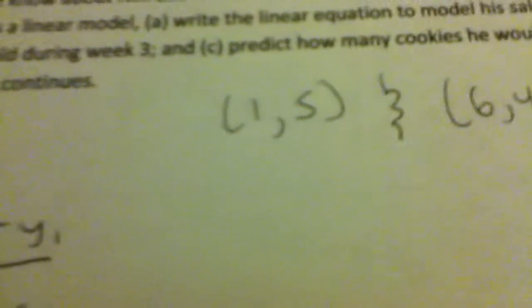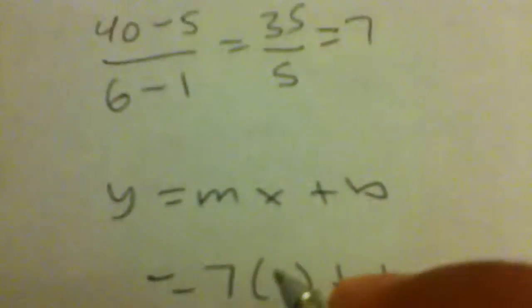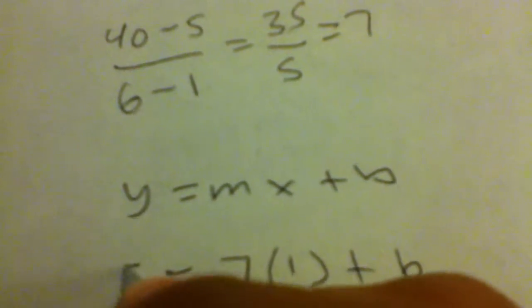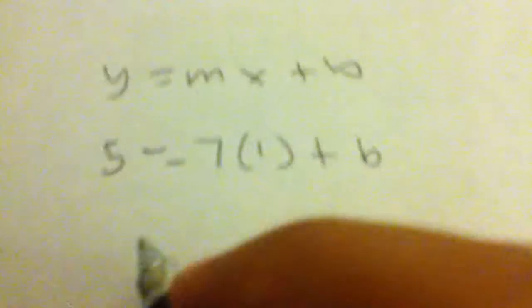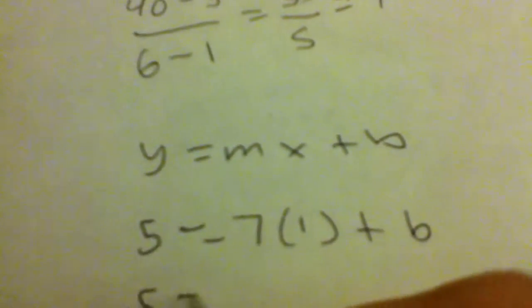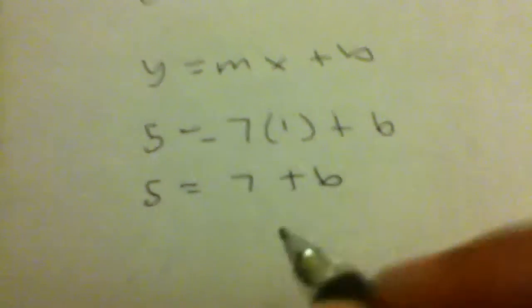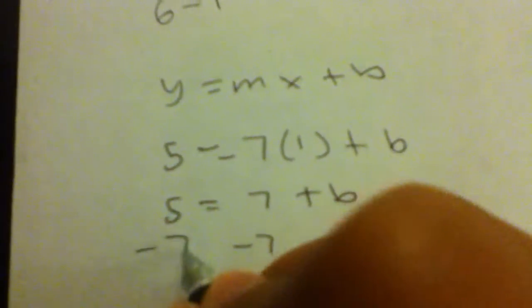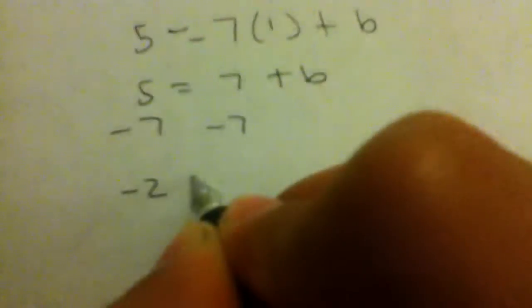Now, I like to use smaller numbers, so let's just use (1, 5). Our x is 1 and our y is 5. So 5 equals 7 plus b. We subtract 7 and we get negative 2 as b.